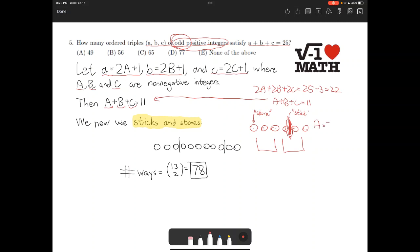So for instance, a could be 3, b could be 4, and c could be 4.